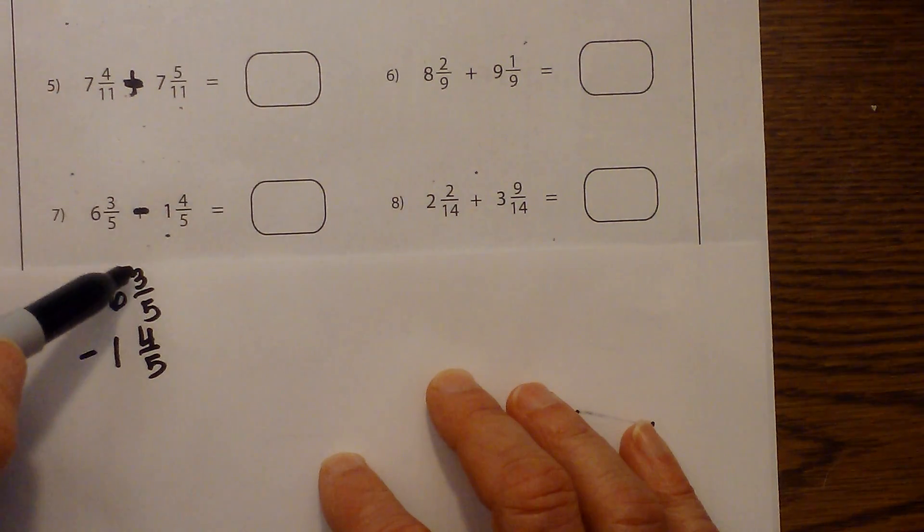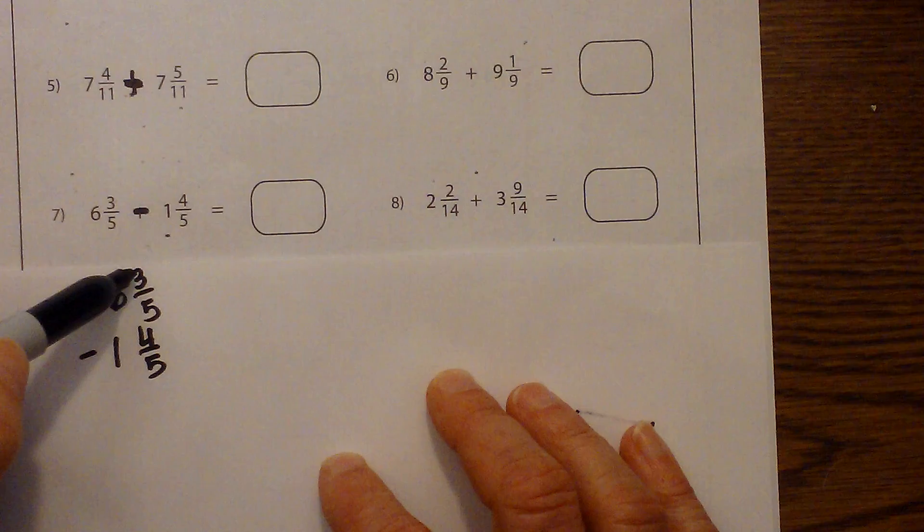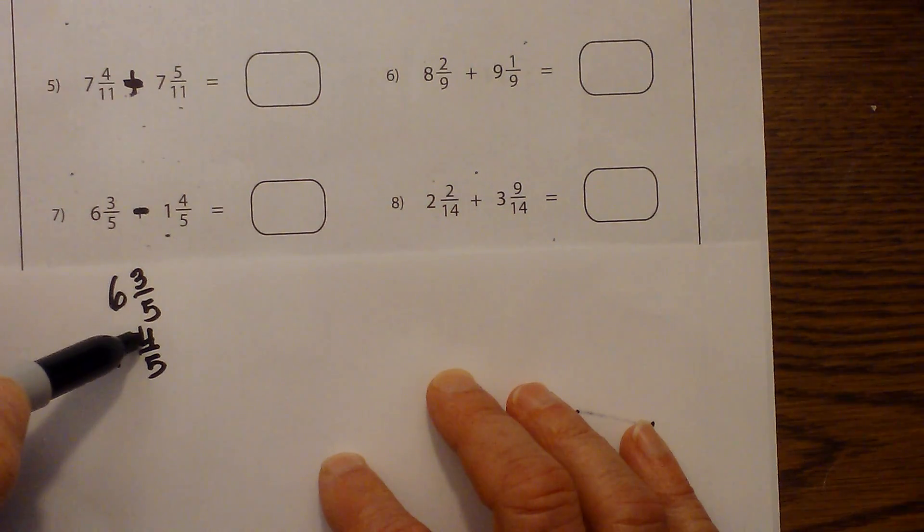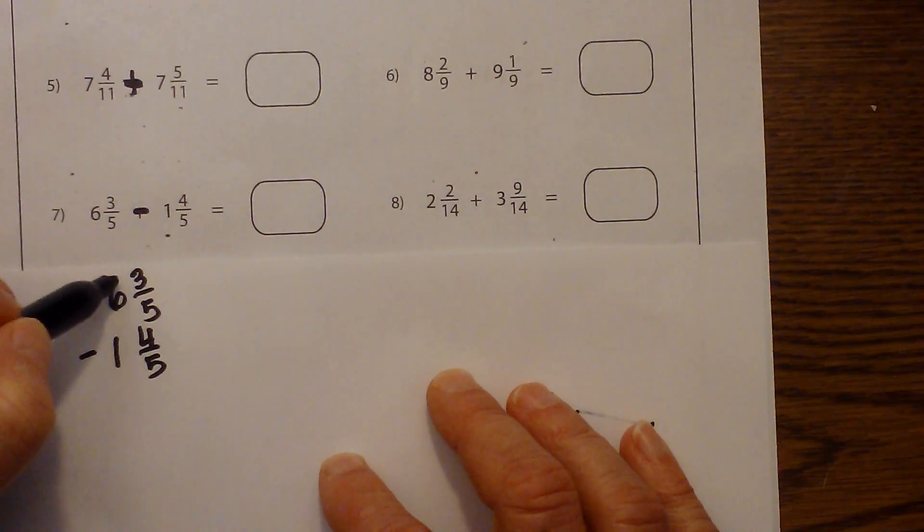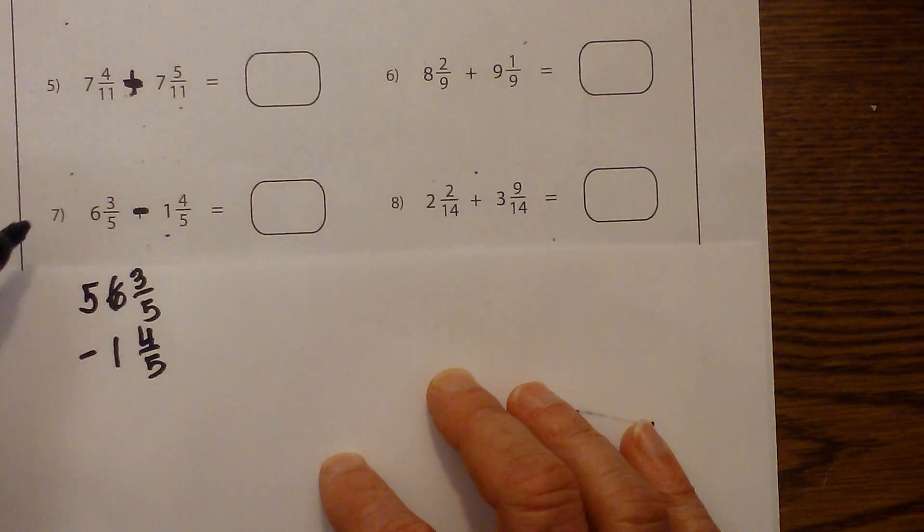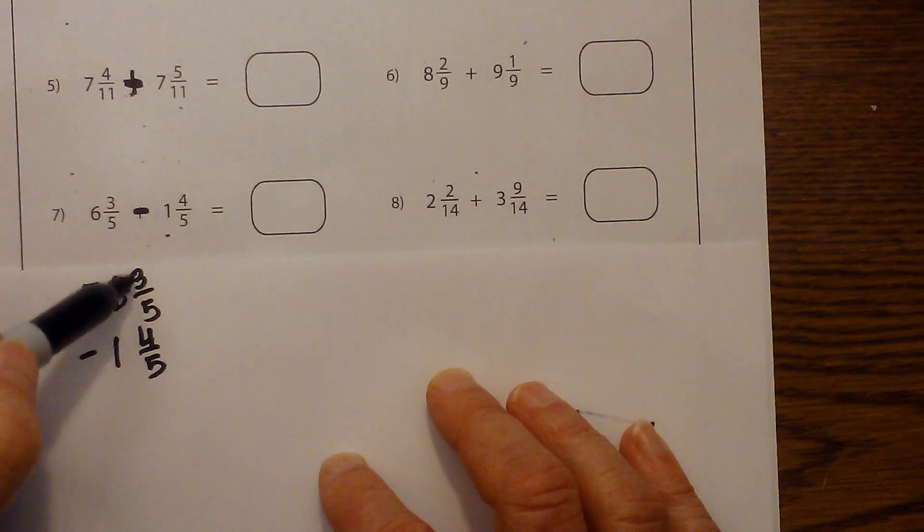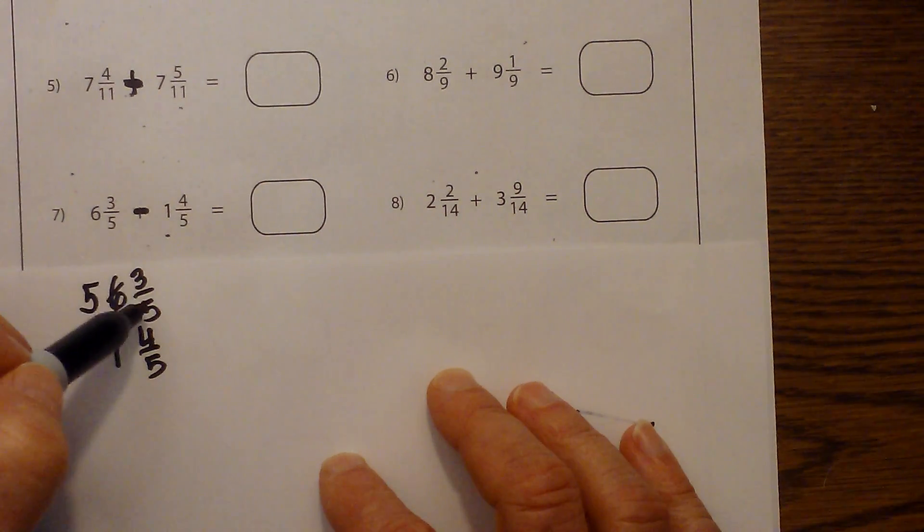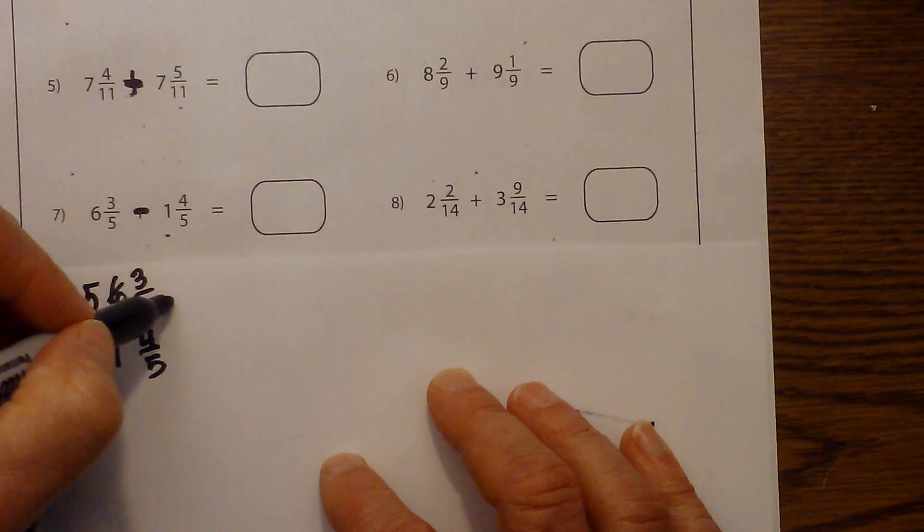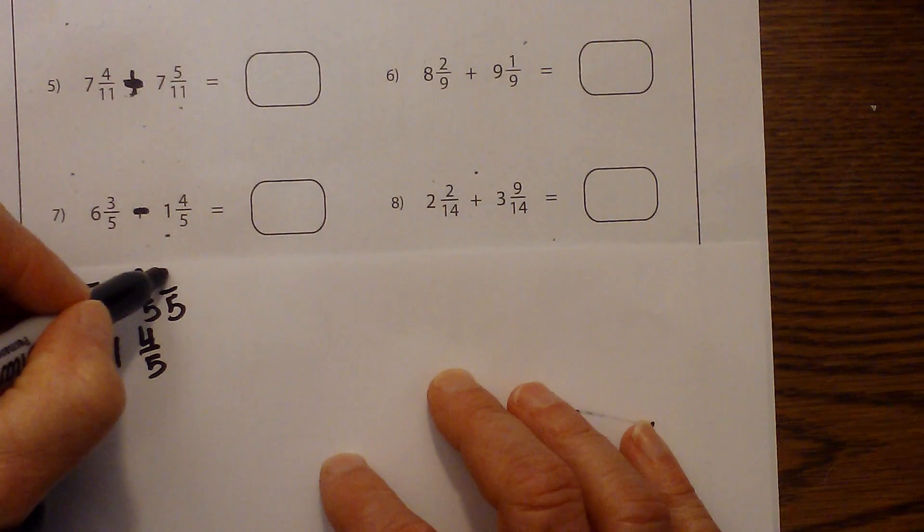We start with the fractions. But you can see I have a problem. I can't subtract 3 minus 4. So I need to borrow 1 from this 6. So I'm going to borrow 1, the 6 becomes a 5. And then what you do is you're going to add the 1 to 3 fifths. And I can rewrite the 1 by using the denominator of the fraction that needs to borrow and place it over itself.